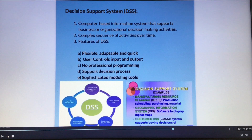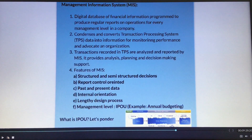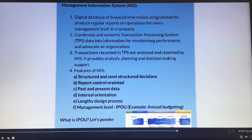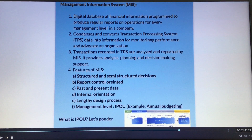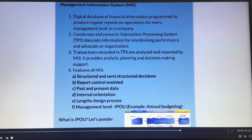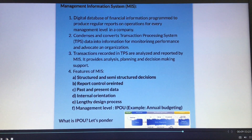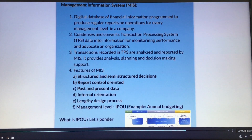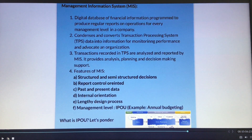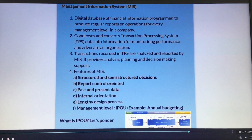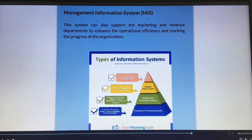DSS involves a complex sequence of activities over time. Next, management information system (MIS) is a computerized or digital database of financial information programmed to produce regular reports on operations for every management level in a company. MIS also needs to support an organization, and transactions recorded in TPS are analyzed and reported by MIS. The IPOU model refers to input, process, output, and user. You can look at the details of the pyramid.